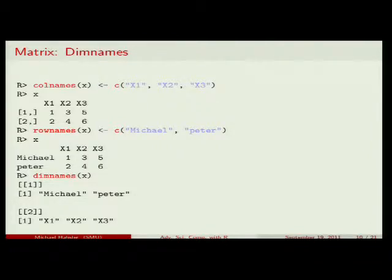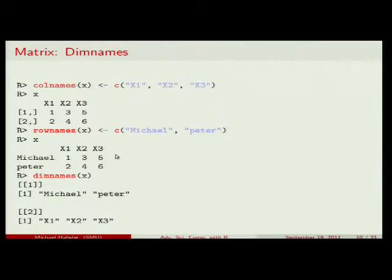Just as vectors can have named positions, you can do the same for matrices and it's very useful. For example, I can set colnames to x1, x2, x3 and rownames to Michael and Peter. Then the matrix displays with column and row names, making it much easier to work with.